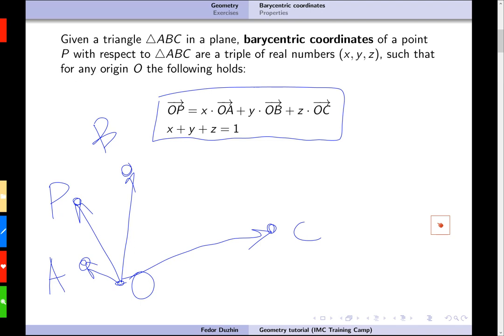Well, the first thing that I'm going to do, I'm going to prove that this is well-defined in the sense that it does not depend on the choice of the origin. Okay, so such a triple of real numbers. Yeah, by the way, at the moment, it's not even clear that such a triple is unique for every point P, and if every point P has a triple of barycentric coordinates assigned to it, but we are going to do it later.